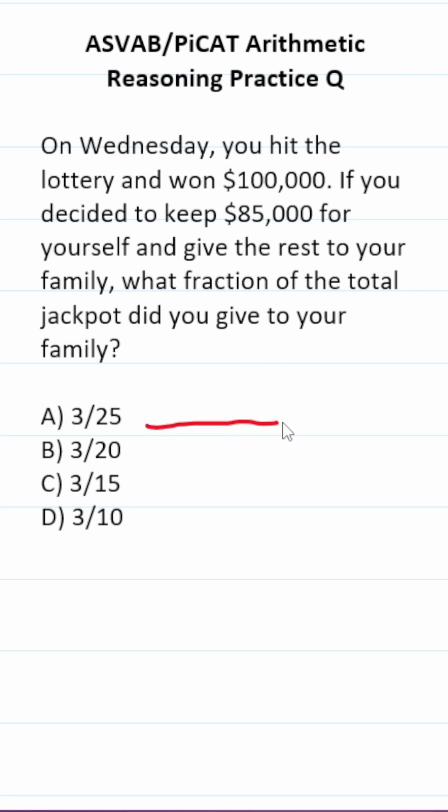So the total jackpot was $100,000. And if you kept $85,000 for yourself, that means you gave $100,000 minus $85,000, or $15,000, to your family.